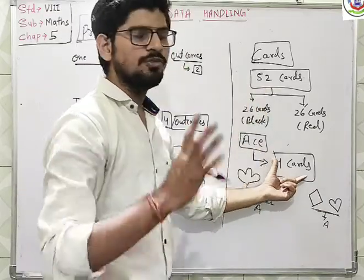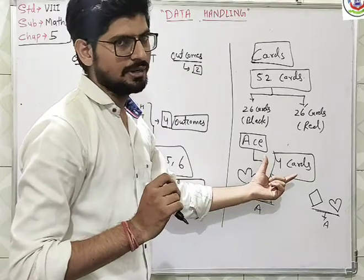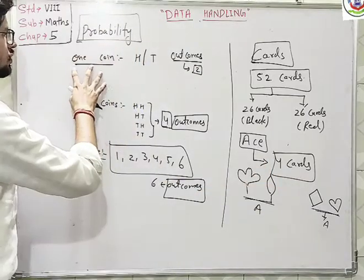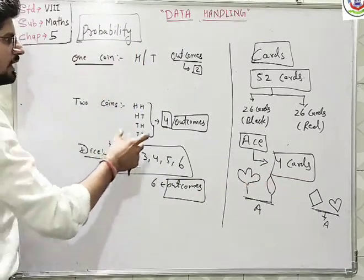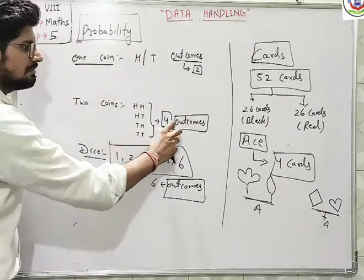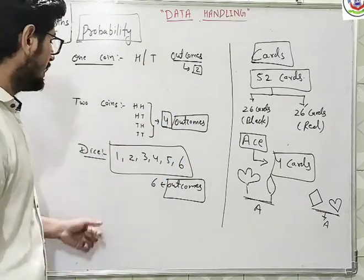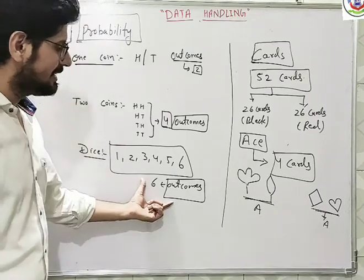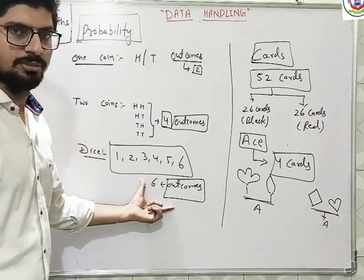So two cards that are red are present - these two and this one. So there are total four number of Aces present here. So if we toss one coin, we have two number of outcomes. If we toss two coins, we have four number of outcomes. And if we roll one die, there are total six number of outcomes.